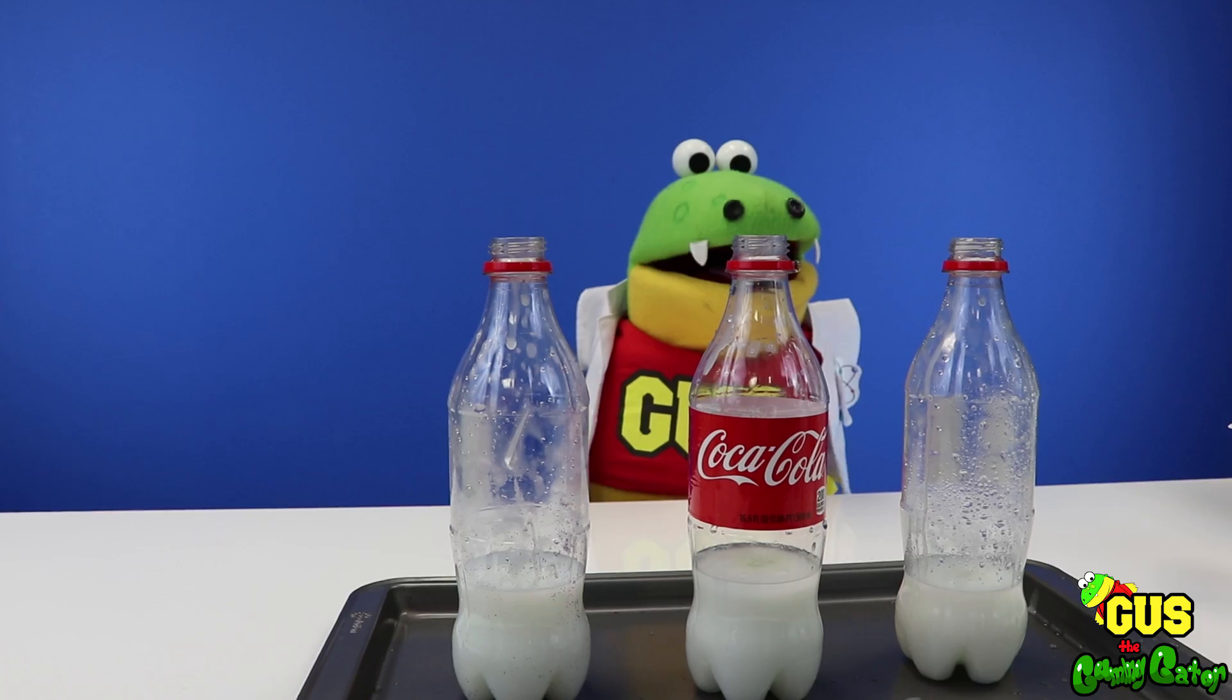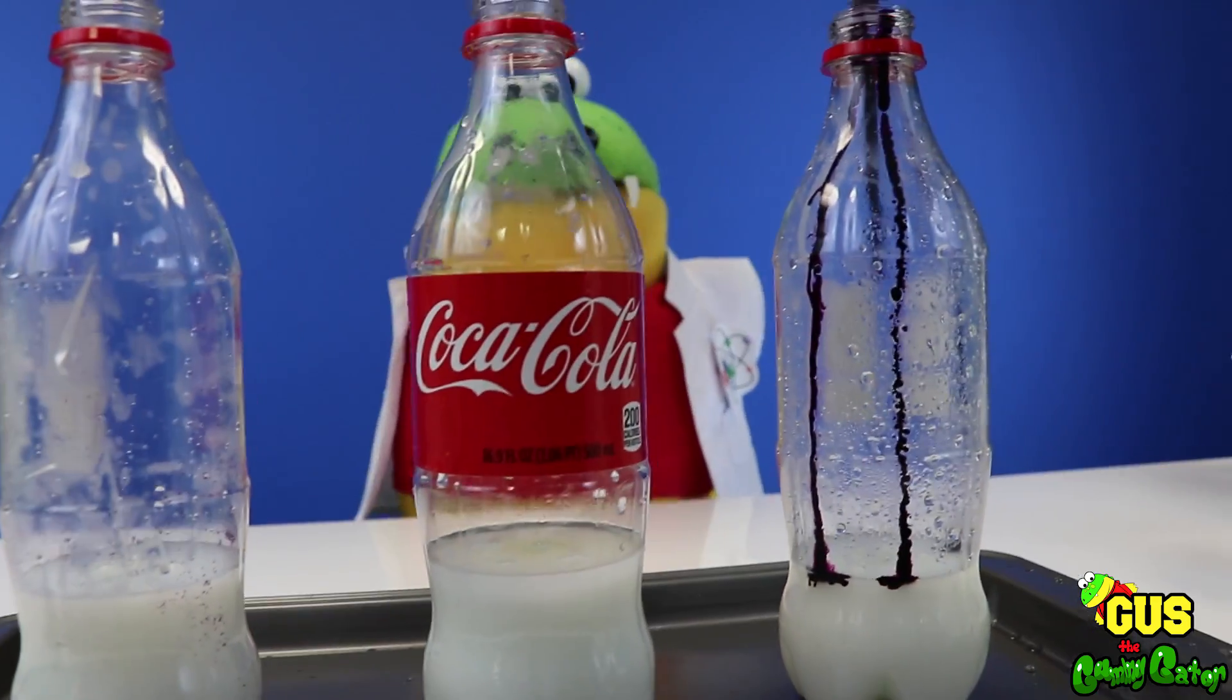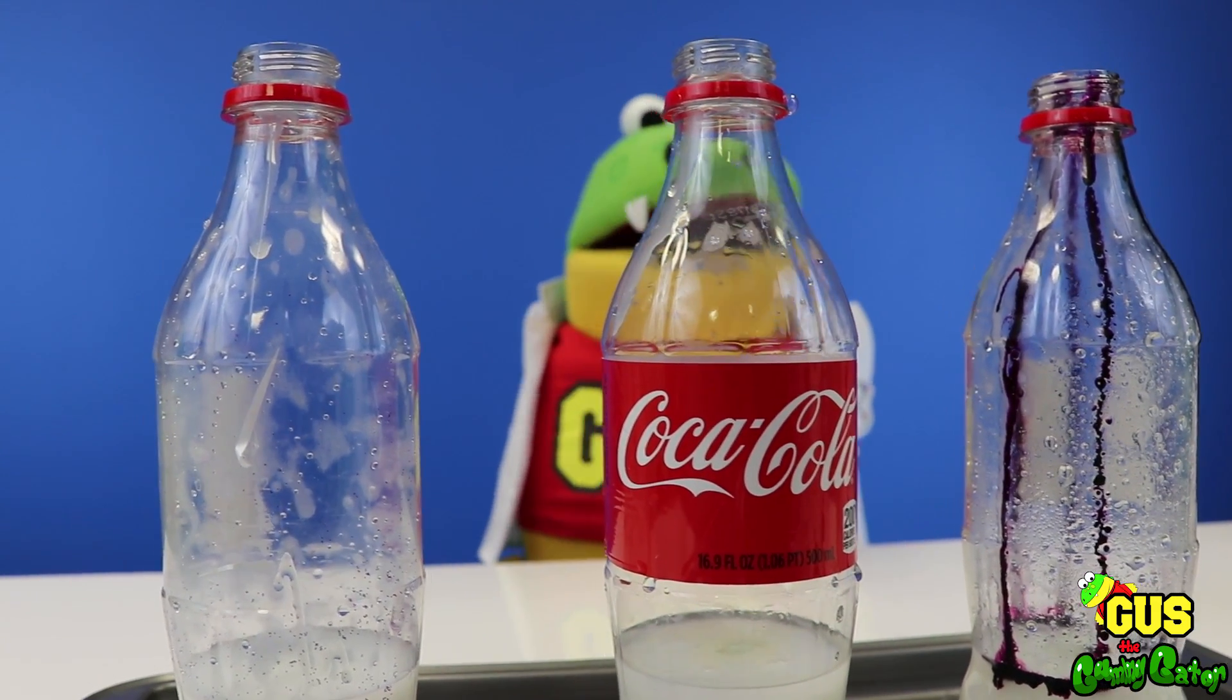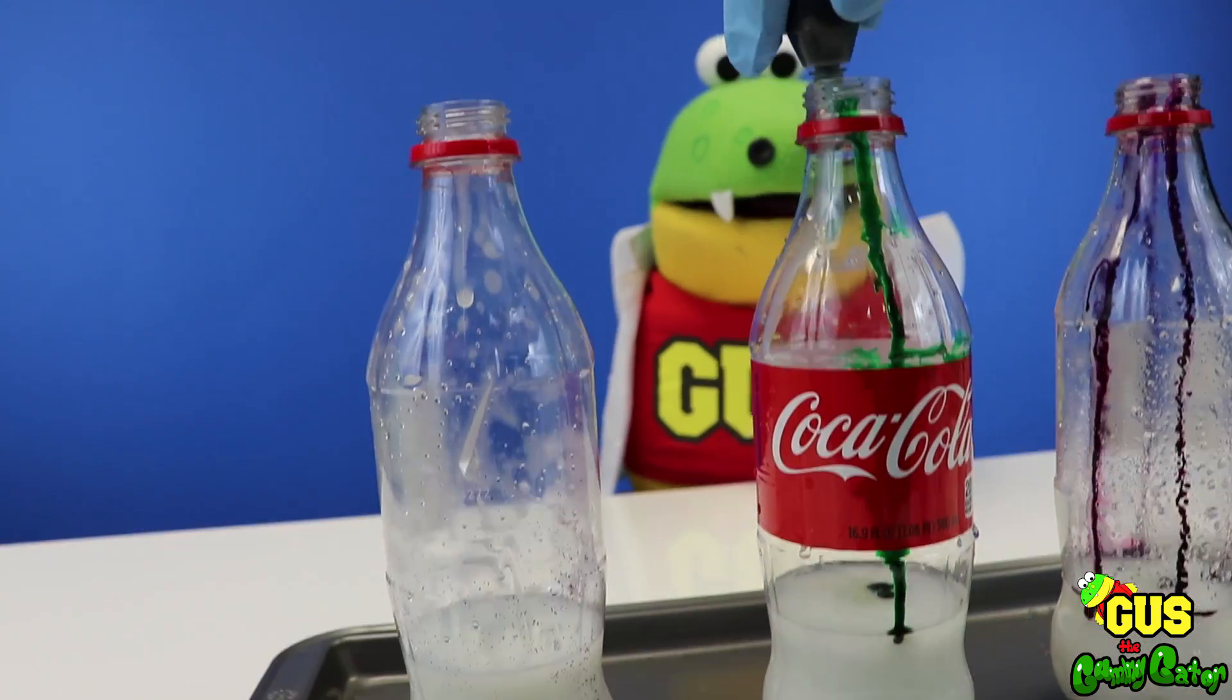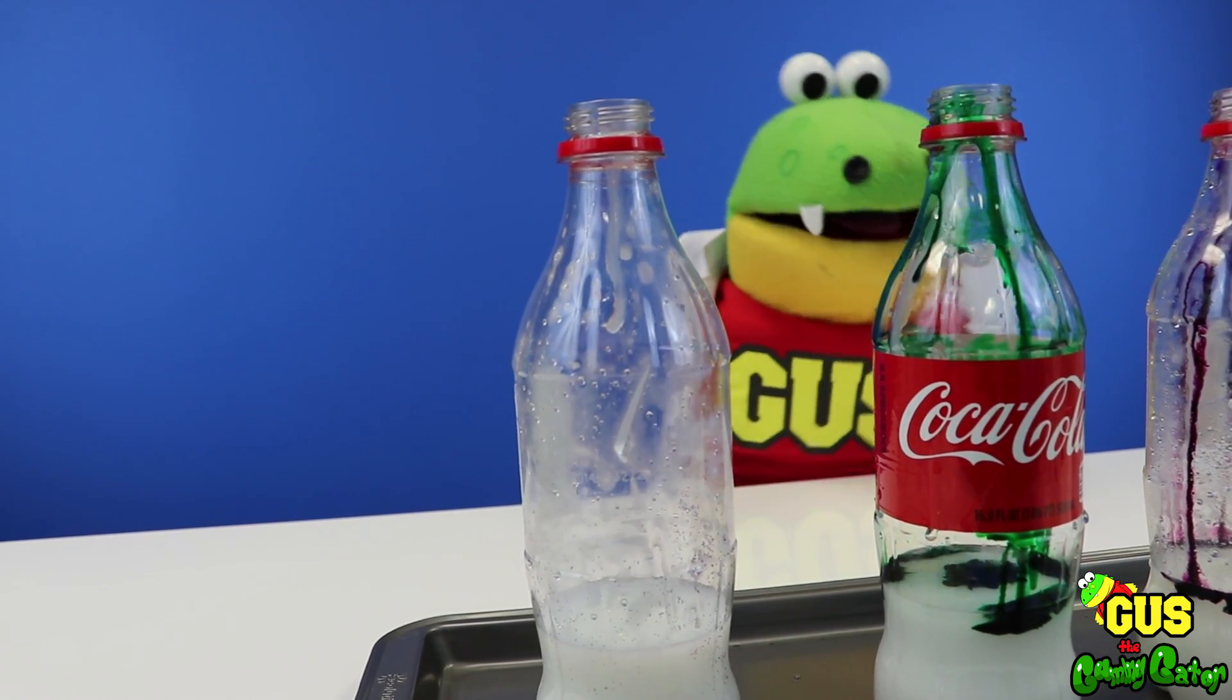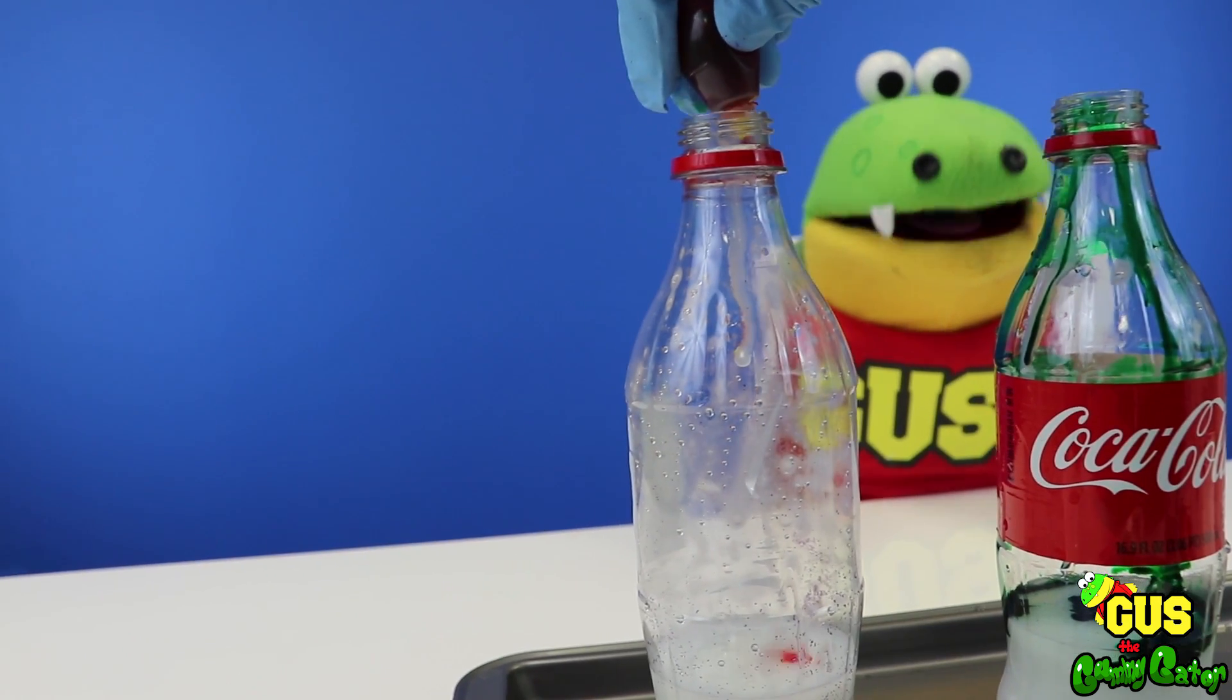Now we're going to make it all colorful with some food coloring! All right! What other colors we got? We've got your favorite color, green Gus! All right! Let's put that in the bottle! Now let's make a rainbow! All right Gus! Here we go! Here's our rainbow!